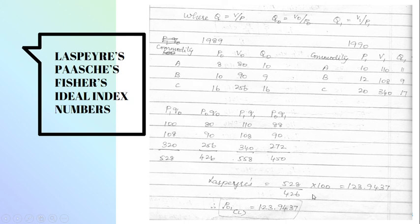Now going on to the Laspier's method. We require P1Q0 divided by P0Q0 into 100. So P1Q0, P1, 10 into Q0, 10, so it is 100. Then 12 into 9 which is 108. 20 into 16 which is 320. The total of P1Q0 is 528.